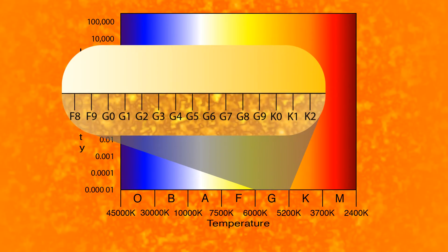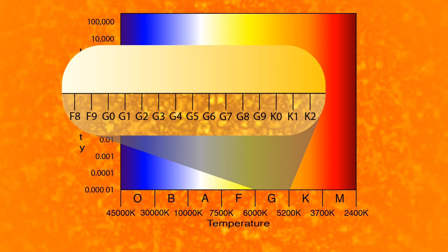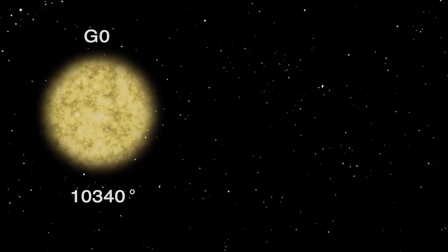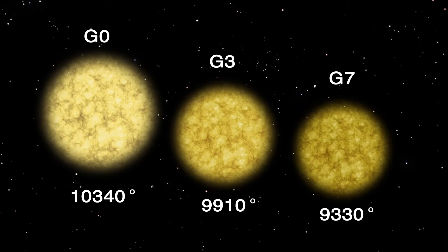Each stellar class is then subdivided by a number from 0 to 9, where G-0 is hotter than G-3 and G-3 is hotter than G-7.